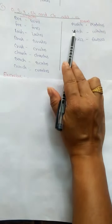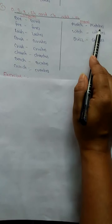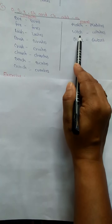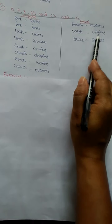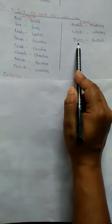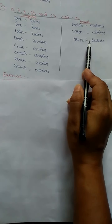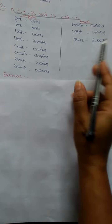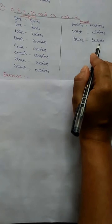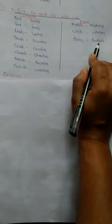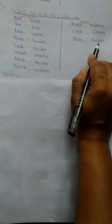Match — ending with CH — becomes matches. Witch — ending with CH — becomes witches. Quiz — ending with Z or X — becomes quizzes. When we use this kind of words, we have to add ES.